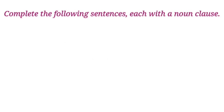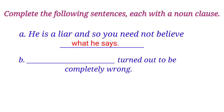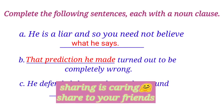Next: 'I discovered that the boy who came here was John's brother.' The noun clause is 'that the boy who came here.' Second section: complete the following sentences each with a noun clause. First: 'He is a liar and so you need not believe what he says.' Second: 'That prediction he made turned out to be completely wrong.' Third: 'He defended the murder on the ground that he was blind.' Two more questions remain for you to complete.